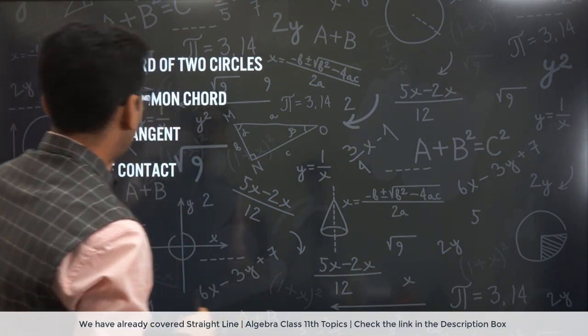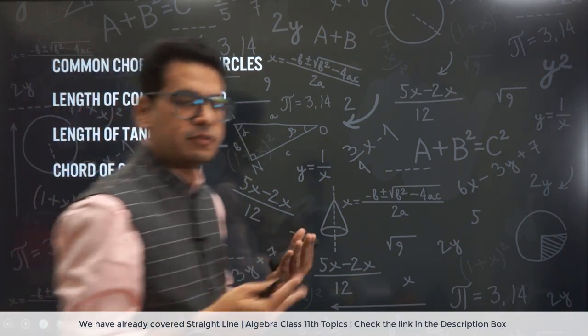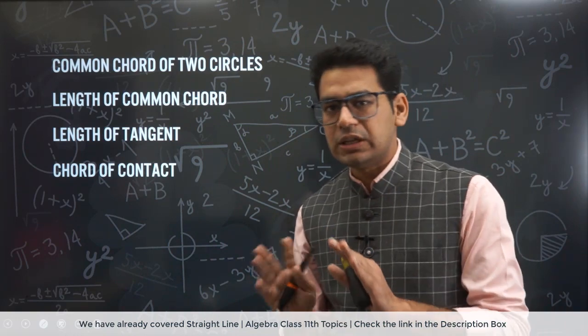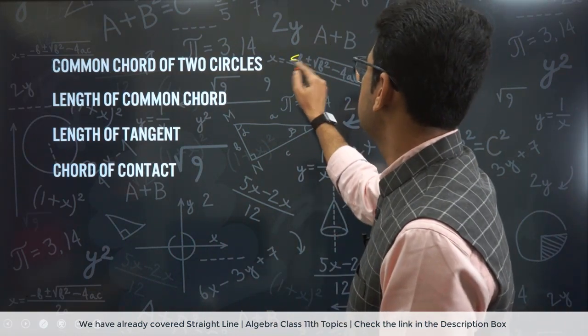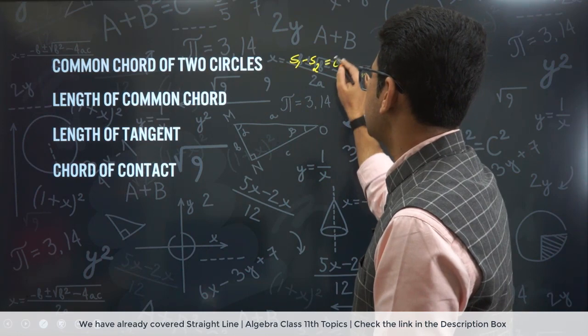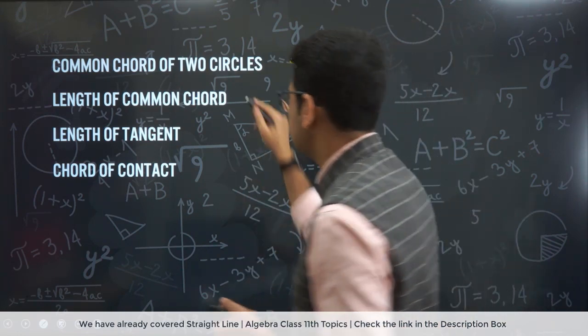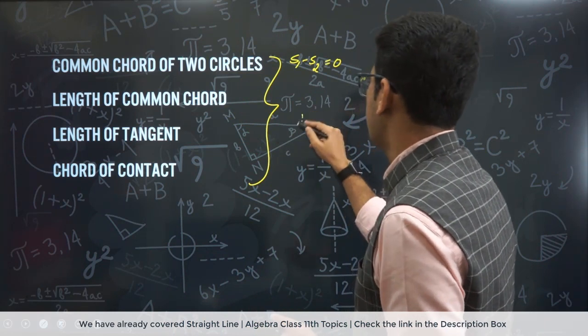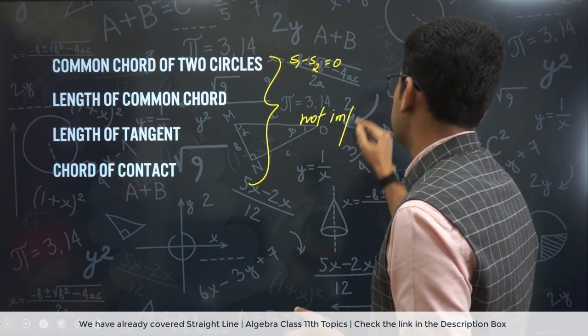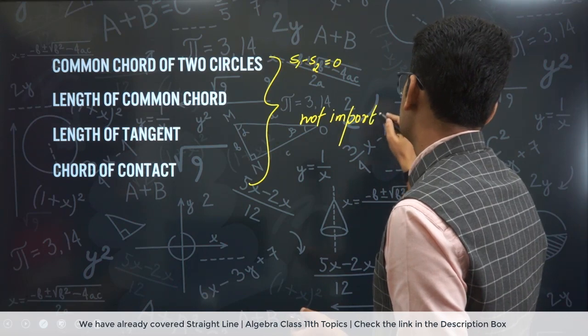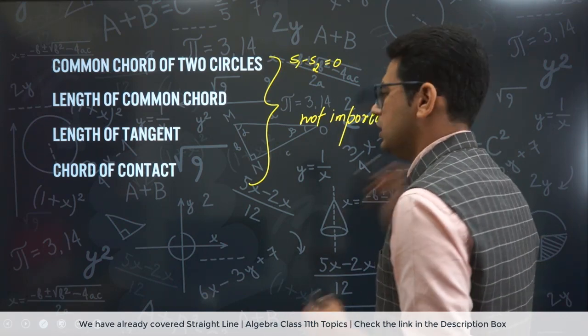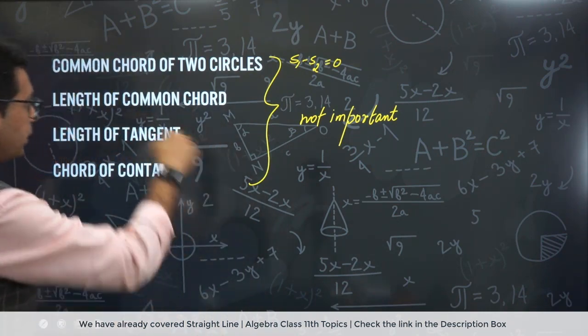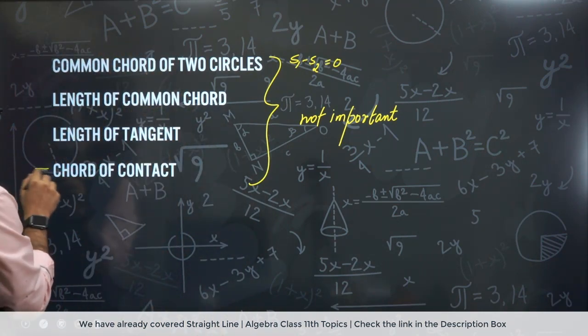Now, common chord. Now these topics are only fillers. Fillers means if you get time, do it. If you don't get time, don't do it. Nothing is very important. Common chord which we write as S1 minus S2 equal to zero. You know, you can solve it. So these are actually good to learn. But not important. They are not important with regard to your JEE Mains syllabus. Okay? Not important from JEE Mains perspective. But if you know, then it's good. If something is important in this in terms of time.